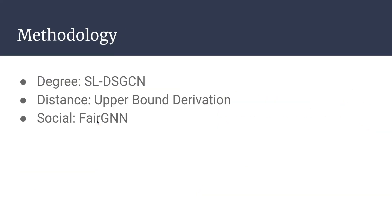Now let's move to solutions. For degree-related bias, I'm introducing SLDSGCN. For distance-related bias, I'm introducing the upper bound derivation from the paper — they did not introduce an architecture but instead provided a closed-form for the bias, which is a valuable contribution. For social bias, I'm introducing FairGNN.